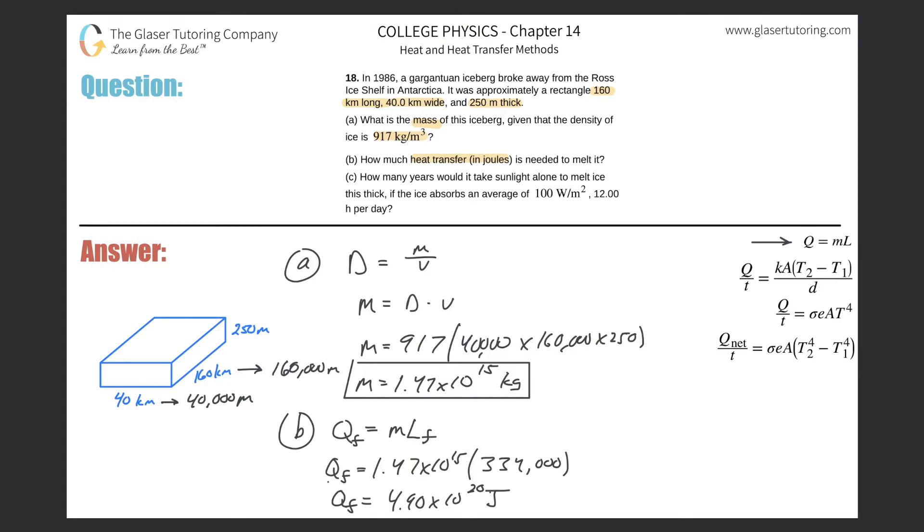So that's how much energy will be required to melt it. It's a lot of energy. Now let's take a look at letter C. Letter C is asking how many years would it take sunlight alone to melt ice this thick if the ice absorbs an average of 100 watts per square meter, 12 hours per day. There's one assumption I realized we're going to have to make. They gave us a wattage per square area.